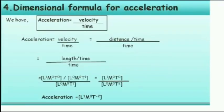For acceleration, the formula is distance divided by time, divided by time. So it equals length divided by time squared. The dimensional formula for acceleration is [L¹, M⁰, T⁻²].